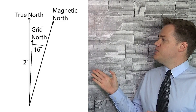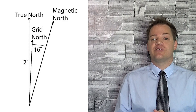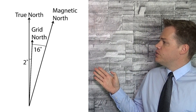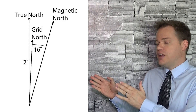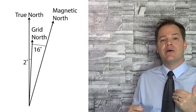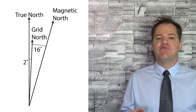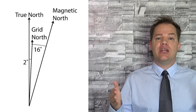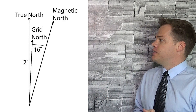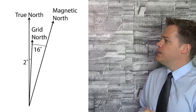What you see next is a diagram, and this is what you will find on certain types of maps. If you see this diagram on a map, you should remember that it is specific to that map, because as I've mentioned, magnetic declination changes from place to place. We can see True North and we can see Grid North.